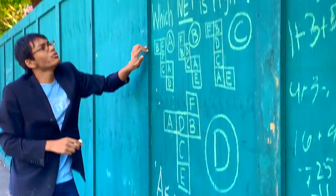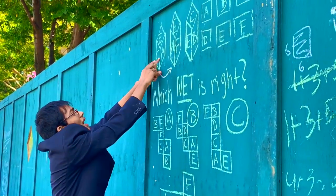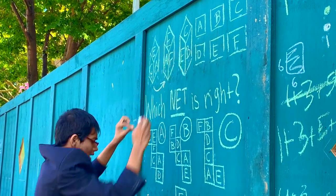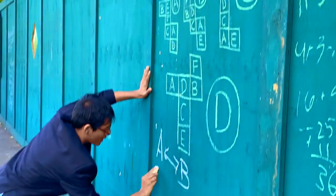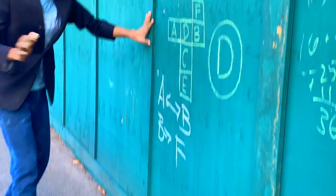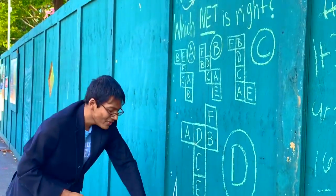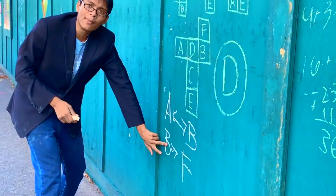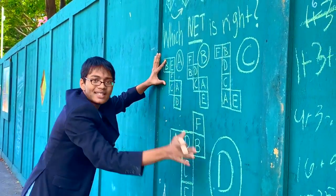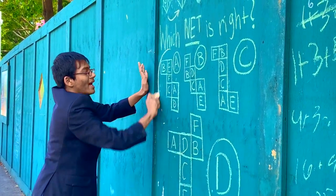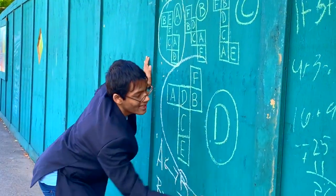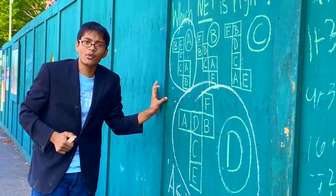In much the same way, we can analyze the next two cubes and find out that B opposes F — B is on the opposite side of F. From these two facts alone, we conclude that the answer is A and D.